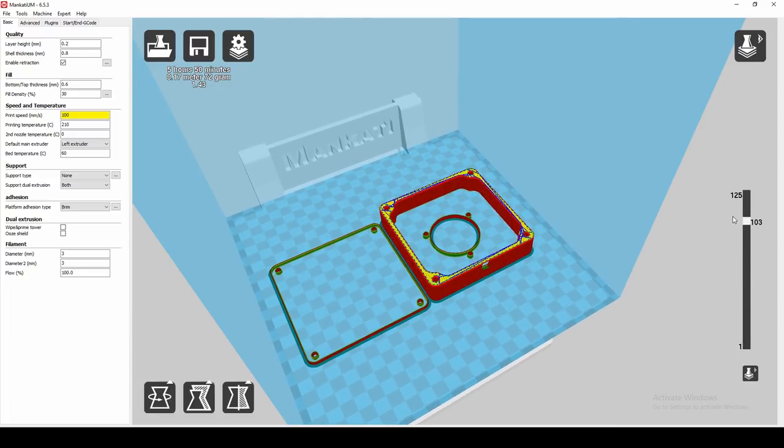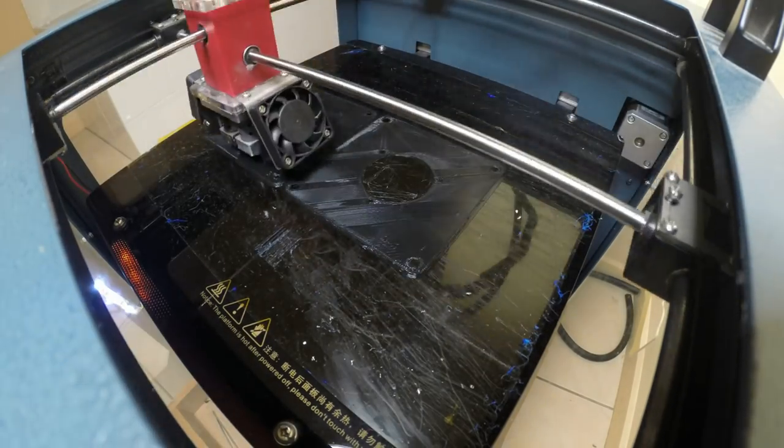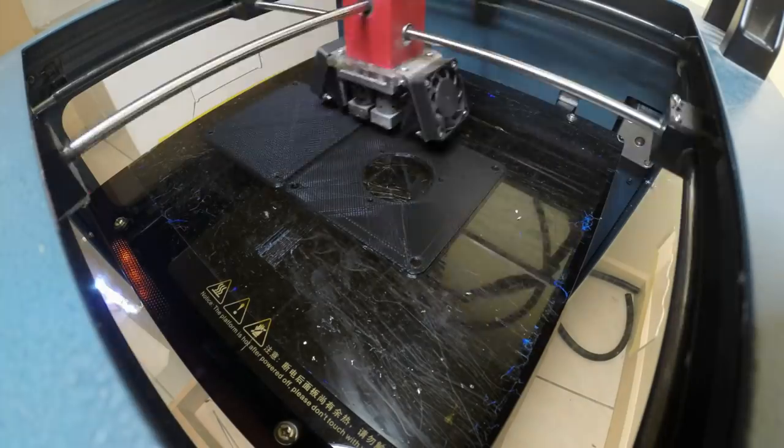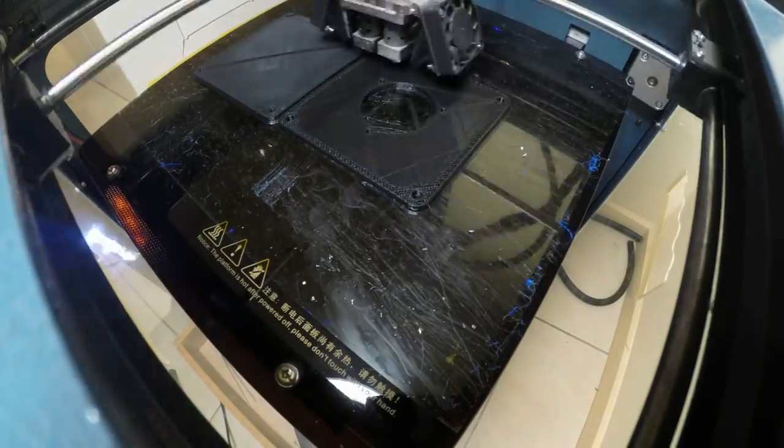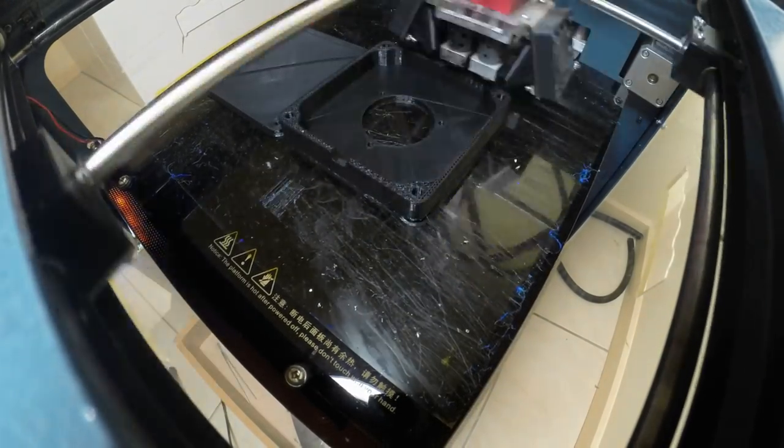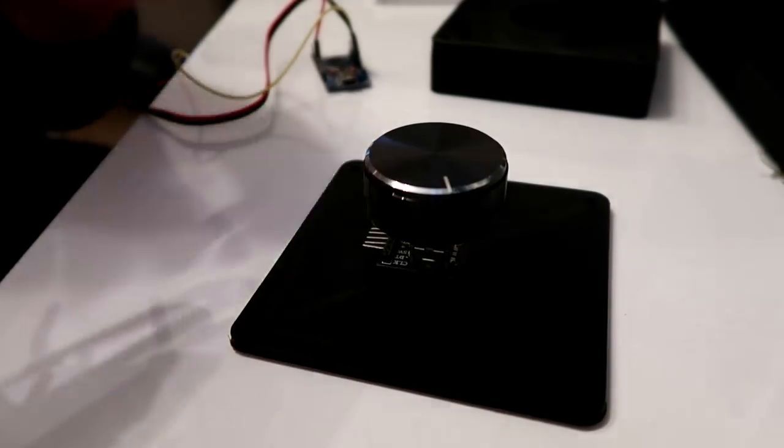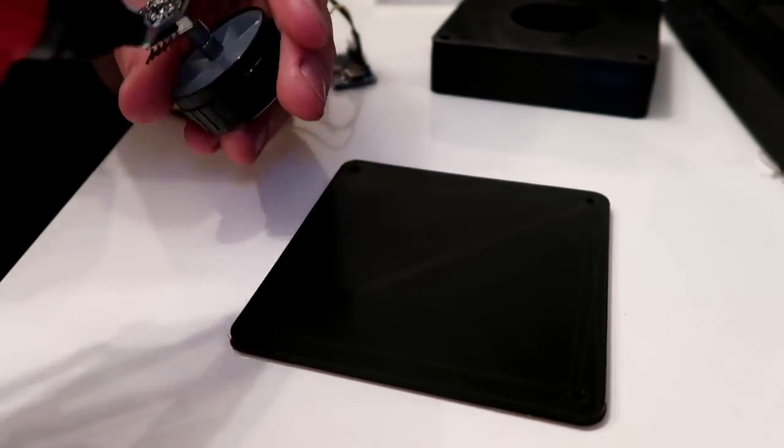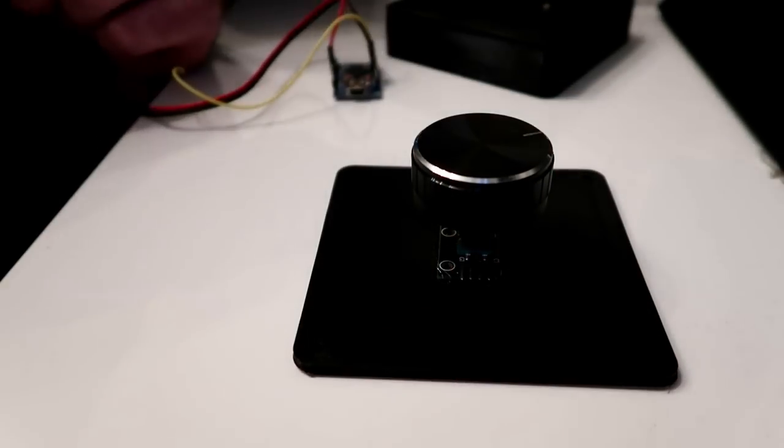Okay, now I'm just going to test mount all the components into the box and what I'm gonna do is hot glue the rotary encoder down and then attach everything back into the box and all the cables back up.